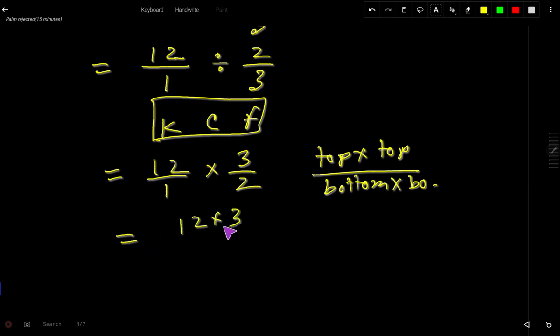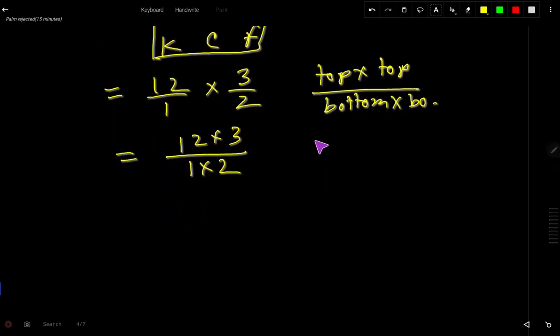12 times 3 divided by 1 times 2. So this is a new fraction. So now in the third step, you have to reduce this fraction if needed. So we can reduce.